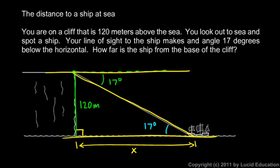And in this case, we can say that the tangent of 17 degrees, the tangent is opposite over adjacent. So here's the side that is opposite the 17 degree angle. And here's the side that is adjacent. So in this case, the tangent of 17 degrees is 120 meters divided by x. So then we can simply solve this for x.